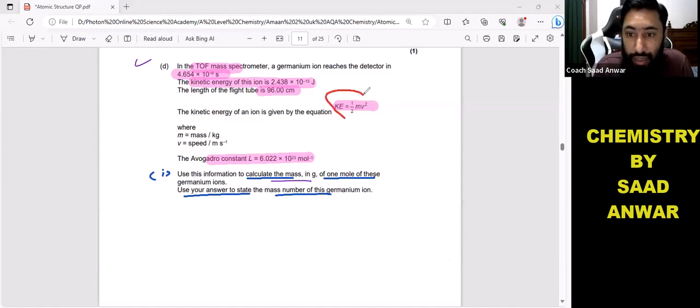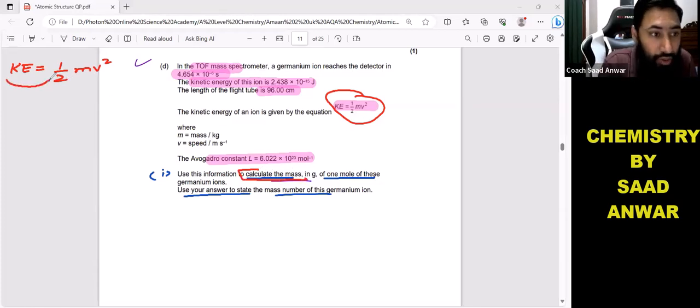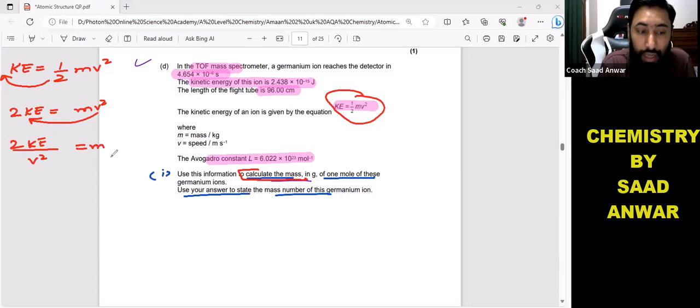This is the main equation which I have to use: kinetic energy equals half mv squared. I have to find mass, so I will rearrange this equation. I will bring this 2 here: 2 times kinetic energy equals mv squared. I will bring v squared to the other side as well: 2 kinetic energy divided by v squared equals m. So this is the formula which I use.